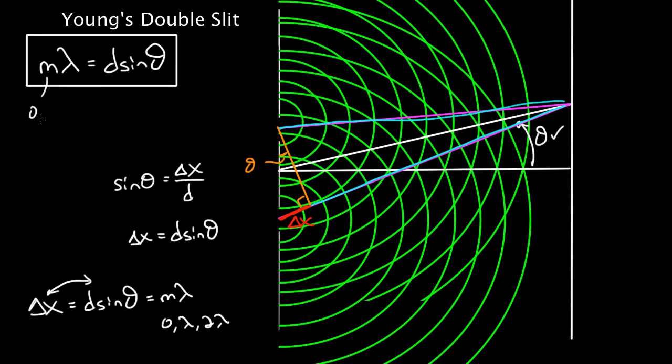This m is going to be zero, one, two, and so on. The d is the distance between the two slits. That would be d. Theta is the angle from the center line up to the point on the wall where you have a constructive point. And lambda is the wavelength. Lambda is the wavelength, the distance between peaks of the wave.